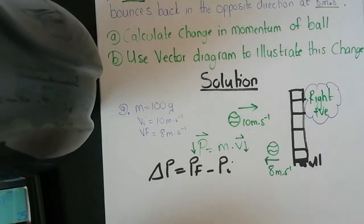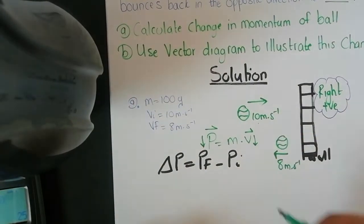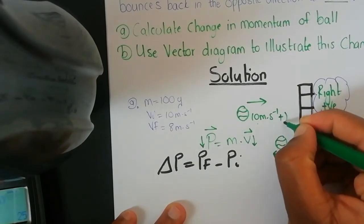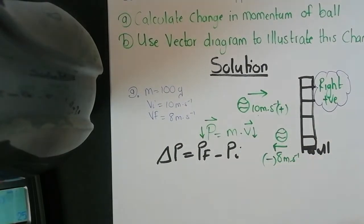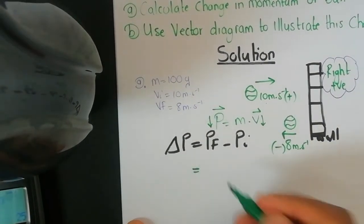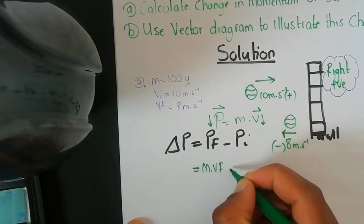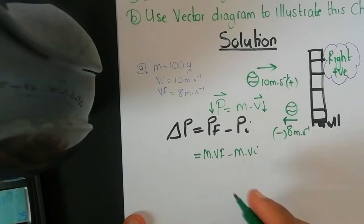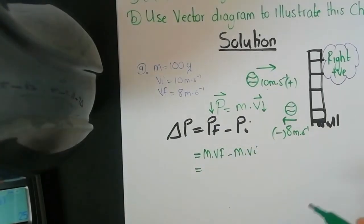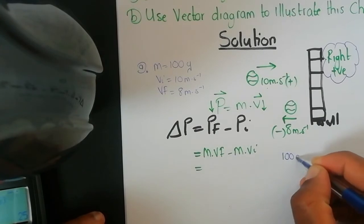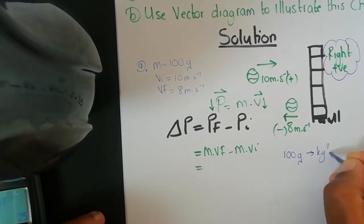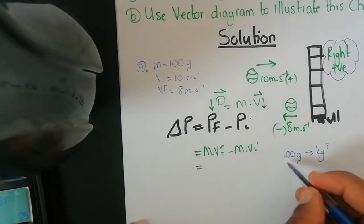Always choose your direction in every calculation for physical science. Since right is positive, the 10 meters per second going toward the right is positive. The ball bouncing back to the left means it is negative 8. The formula becomes: m times v final minus m times v initial. Mass is 100 grams, which must be converted to kilograms by dividing by 1000.